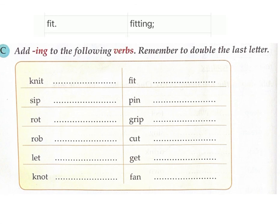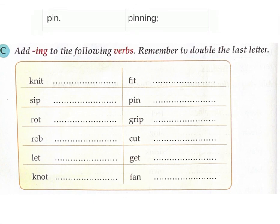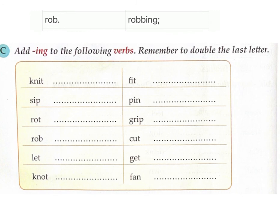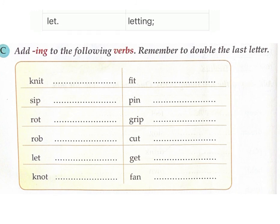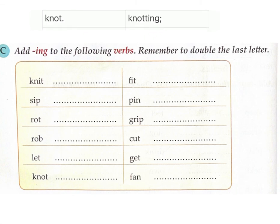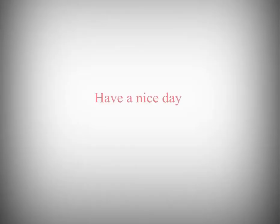Now add -ing to the following verbs. Remember to double the last letter: knit → knitting, fit → fitting, sip → sipping, pin → pinning, rot → rotting, grip → gripping, rob → robbing, cut → cutting, let → letting, get → getting, knot → knotting, fan → fanning.